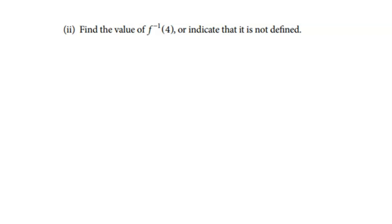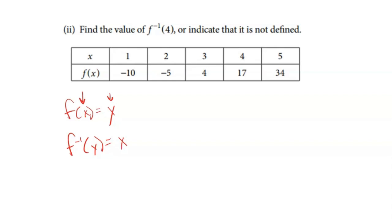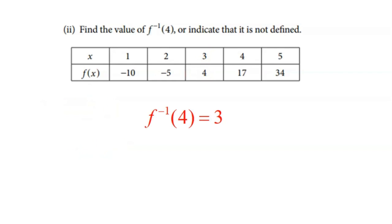Part two of Part A wanted me to evaluate the inverse of F at 4. I have a table that's going to show me this. All I'm going to do is look in my table for an output of 4. Remember, for inverses, the input is now the output. So F of X has input X and output Y — but now we switch that. I'm looking for where I see an output of 4, which is right here, and the input that creates that is 3. So the inverse of function F at 4 is equal to 3.